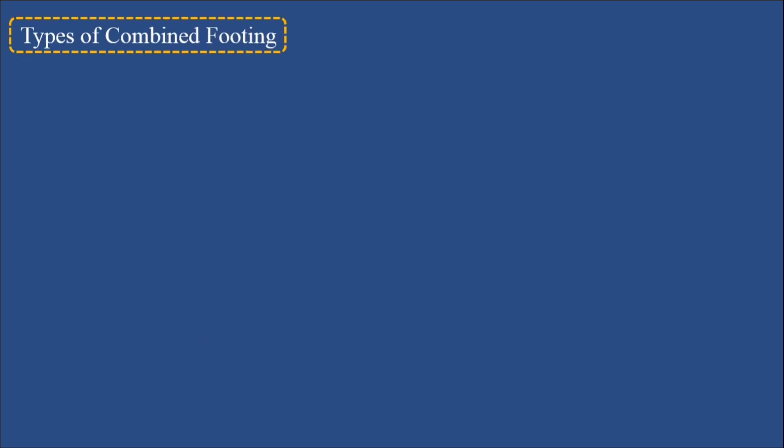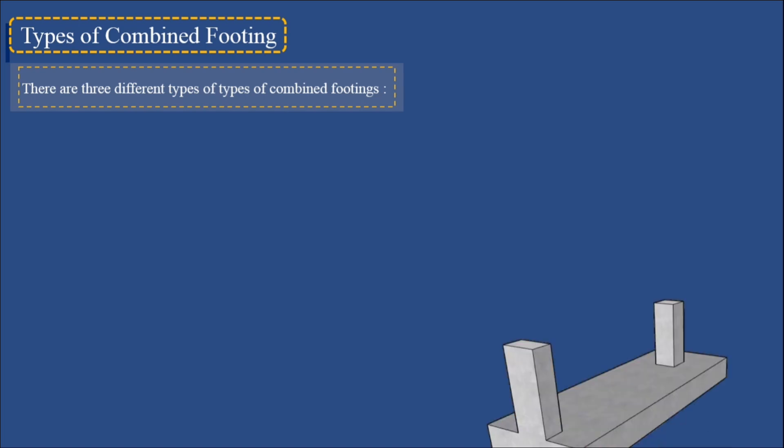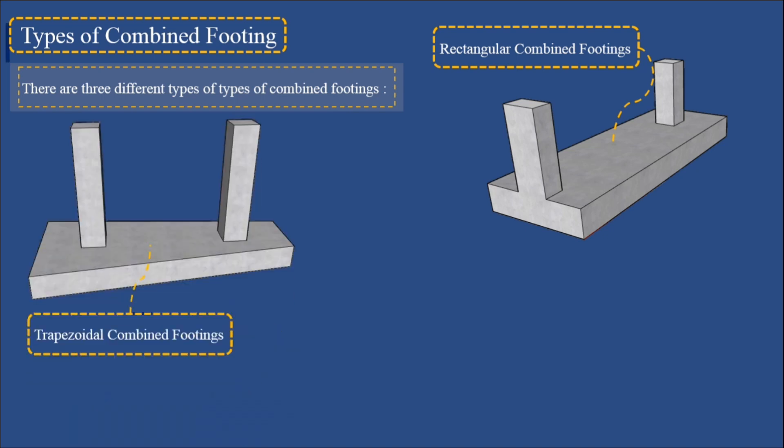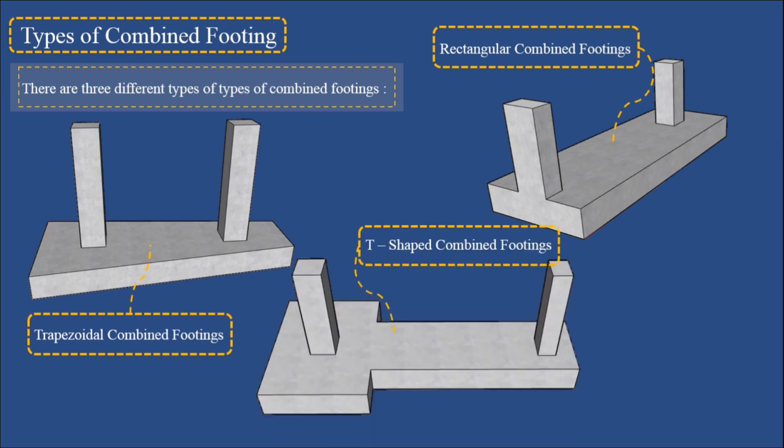Types of combined footing: There are three different types of combined footings. 1. Rectangular combined footings. 2. Trapezoidal combined footings. 3. T-shaped combined footings.